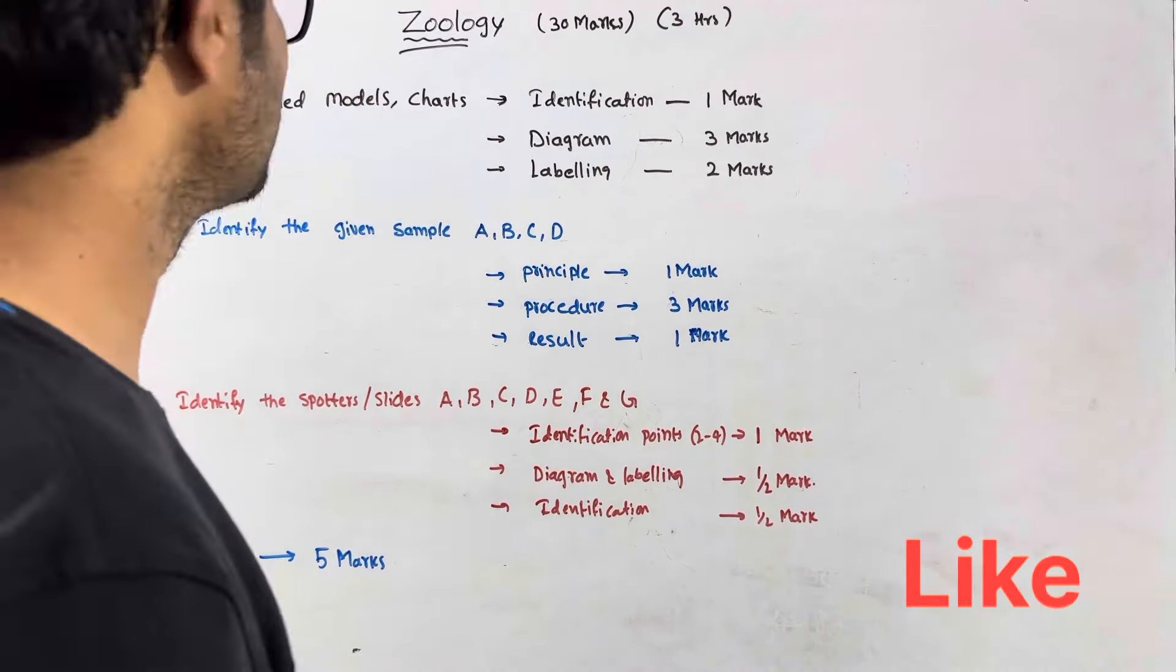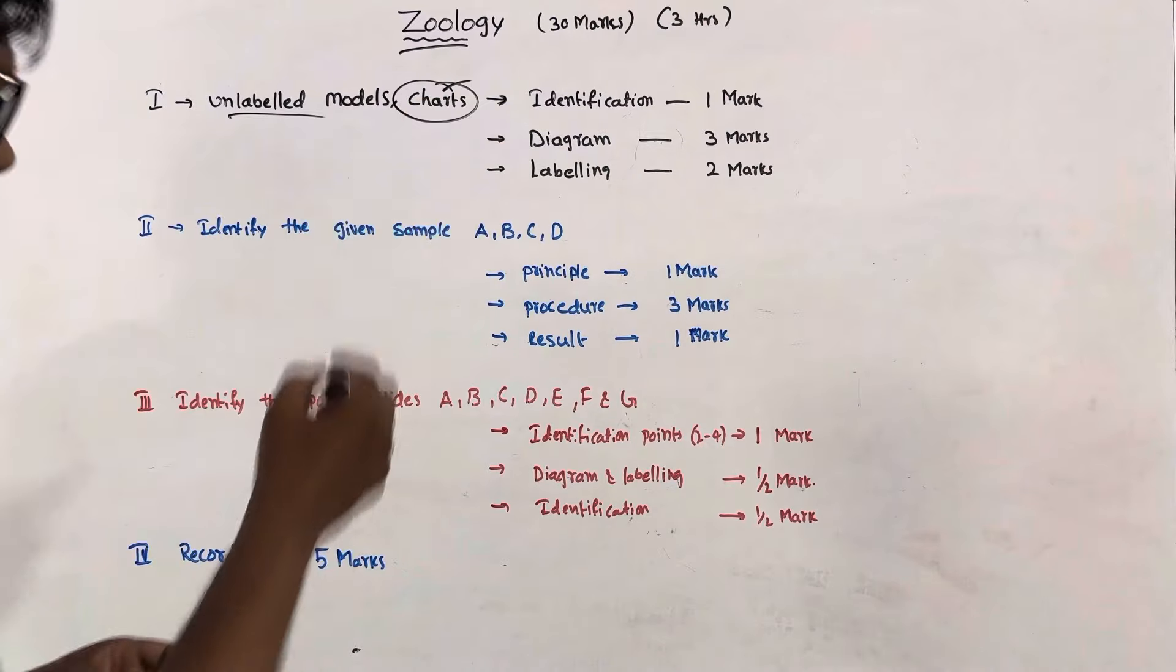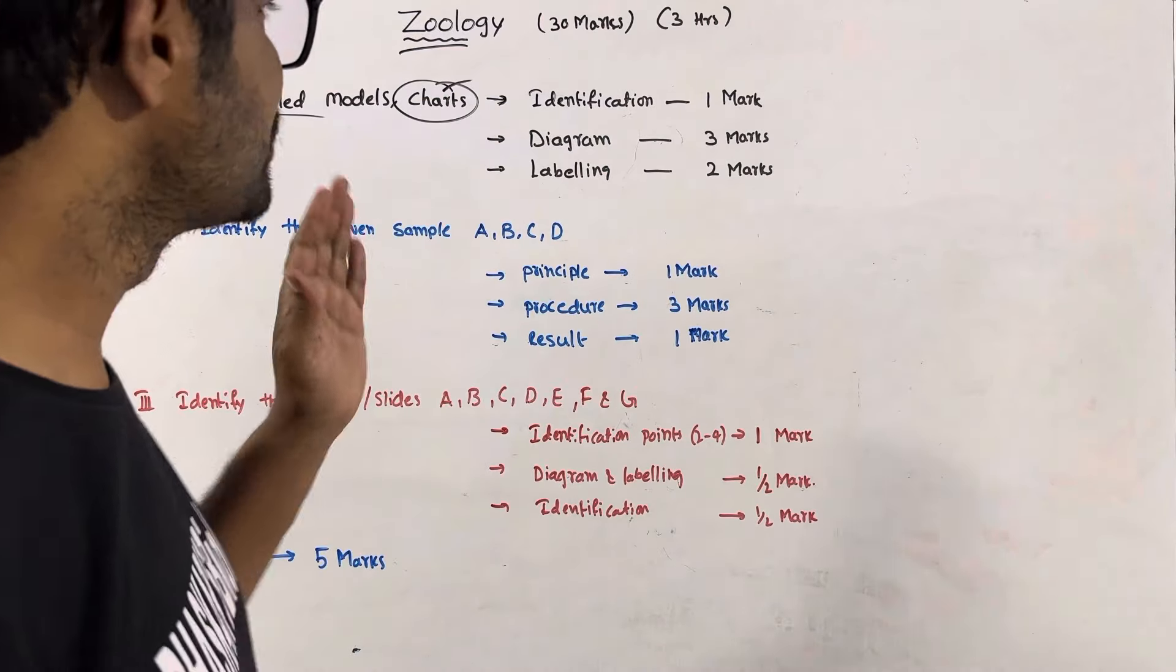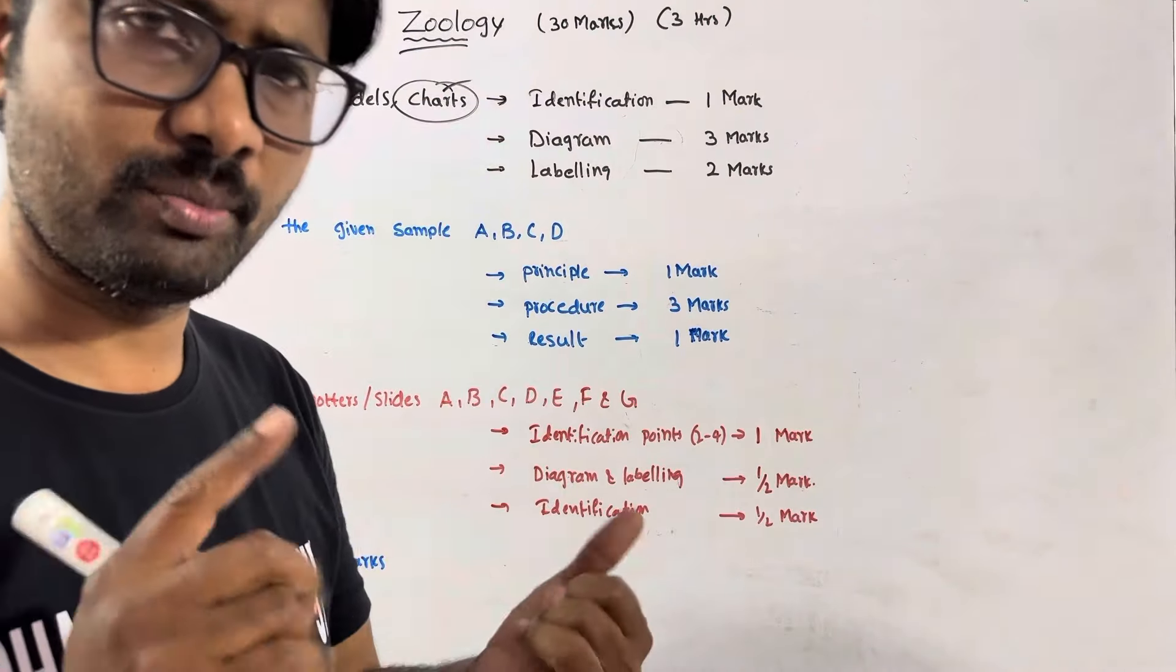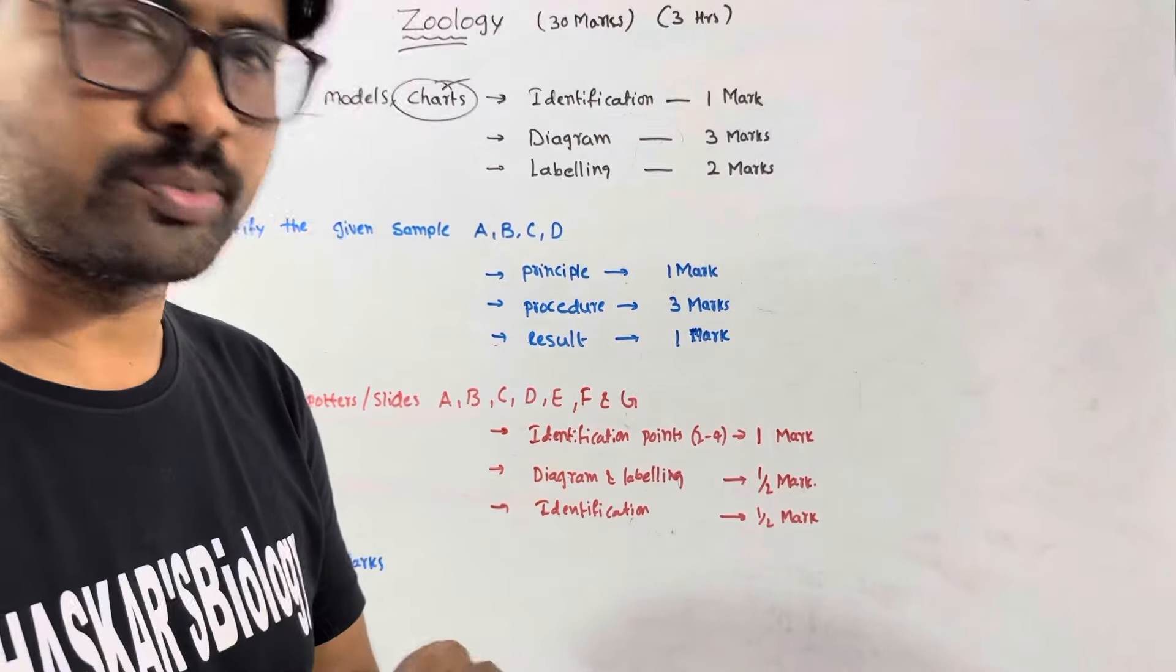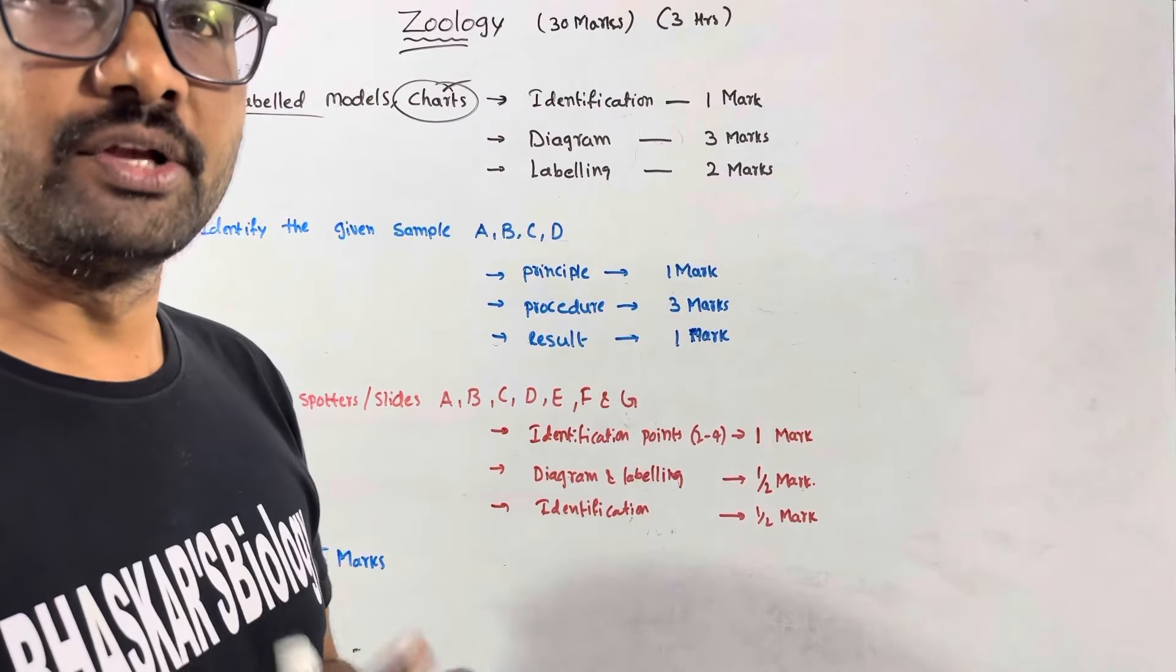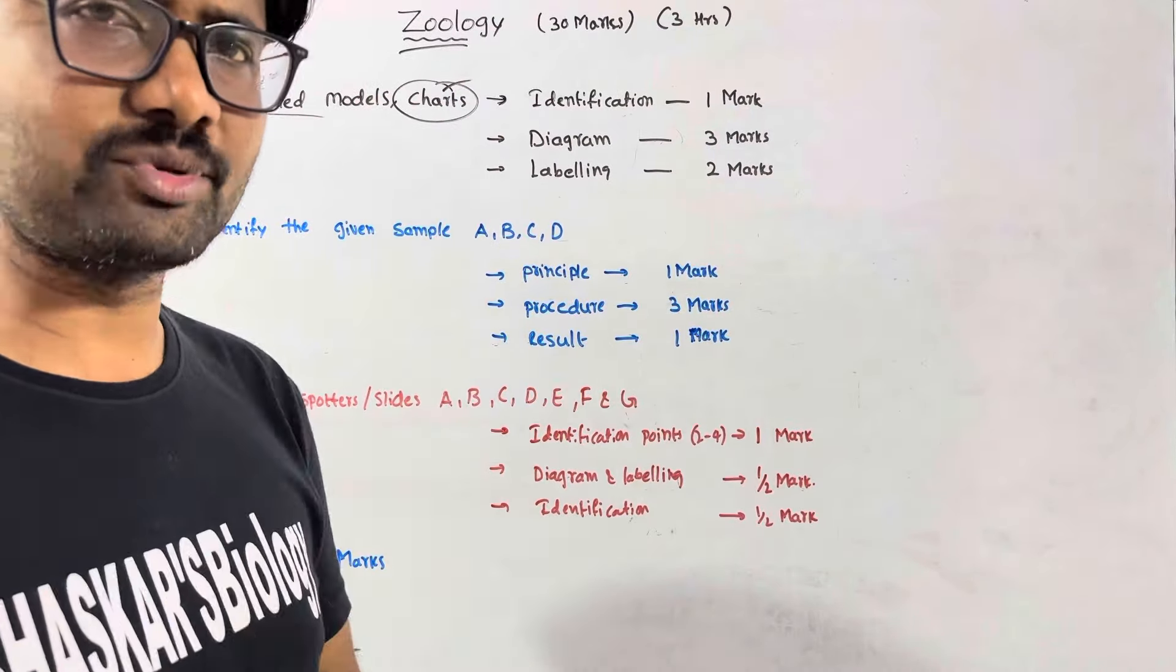First of all, we will get the unlabeled model or chart. First, you will get the charts. There are 11 charts—human point of view, cockroach point of view, earthworm point of view. You need to practice these 11 diagrams. Most important is to label. If you have the 11 diagrams, you can also label them.